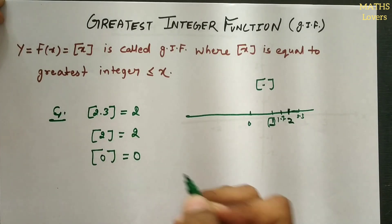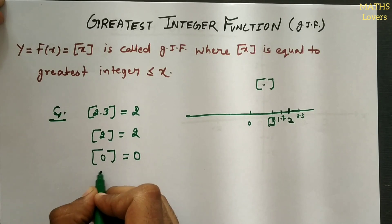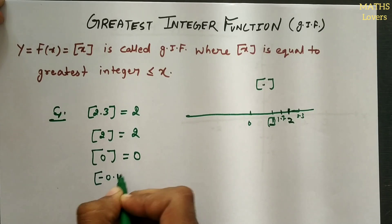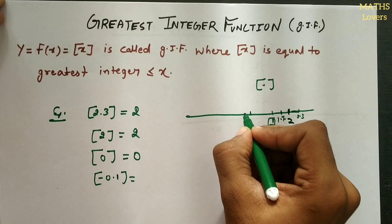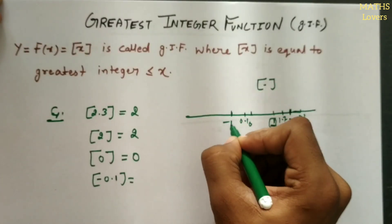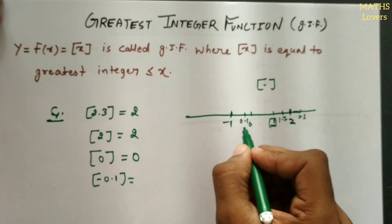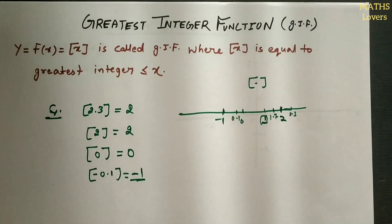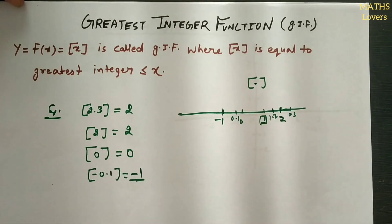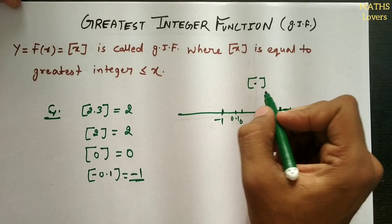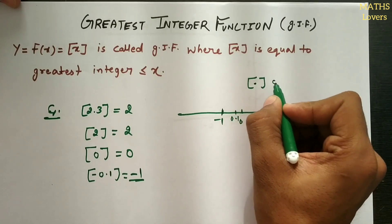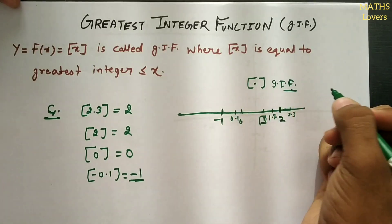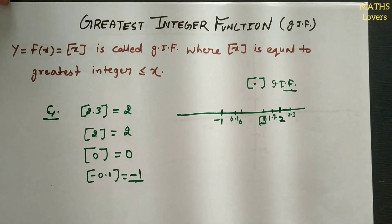The greatest integer of 0 is 0. Now if I take minus 0.1, what will be its greatest integer? Since -0.1 lies between -1 and 0 on the number line, the greatest integer less than or equal to -0.1 is minus 1. We can find the greatest integer of any number this way. GIF is represented by square brackets, and only when written in that notation do we treat it as the greatest integer function.